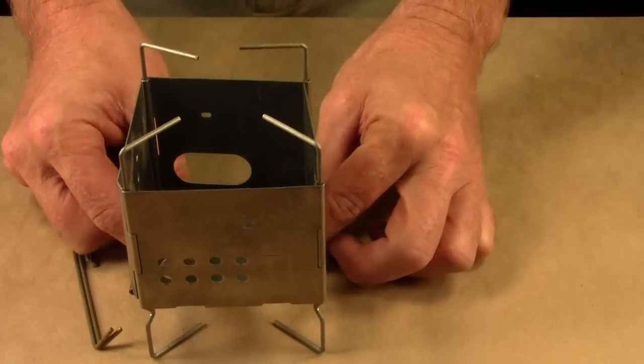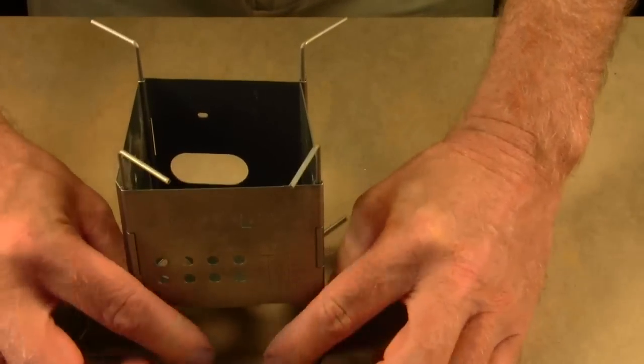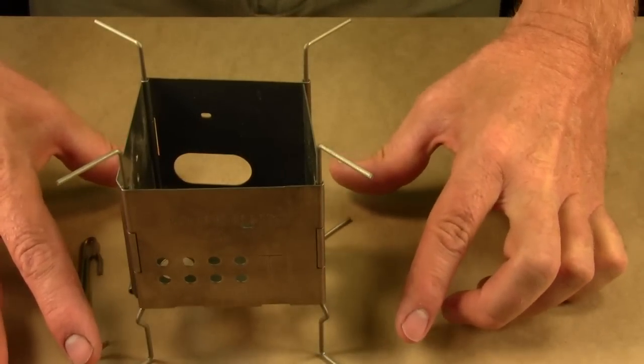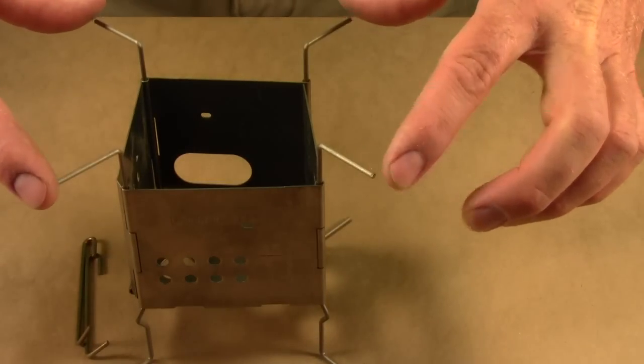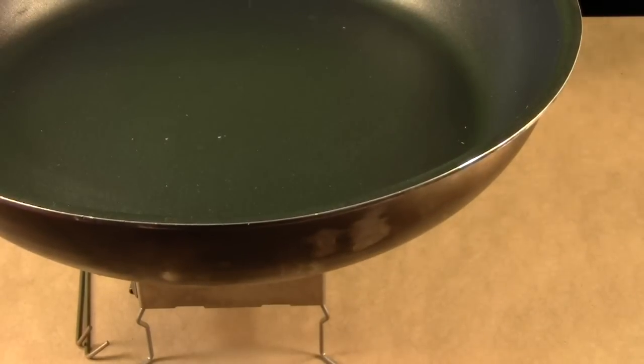And then if you have something larger, you aim these outwards. This gives you a larger footprint, so it gives you more stability, and it gives you a larger pot stand. So then you can use something as big as this great big 10-inch frying pan and have it still be very steady.